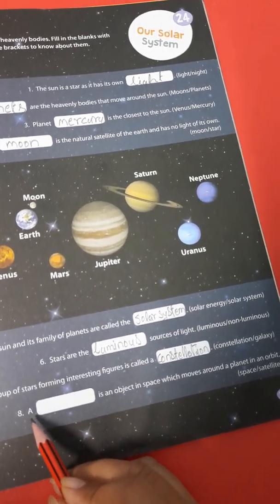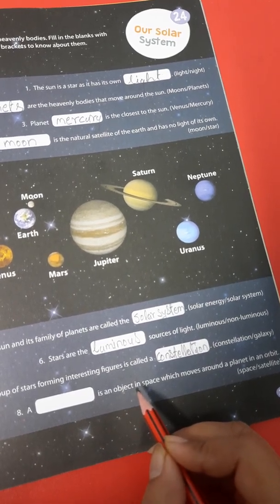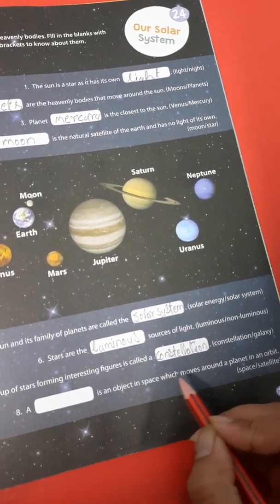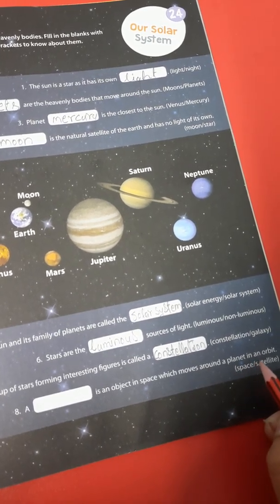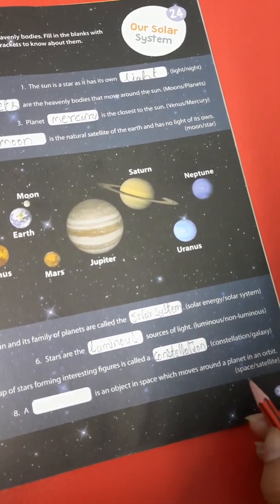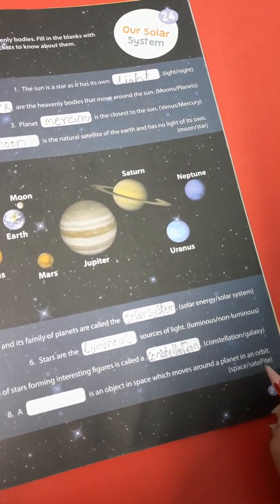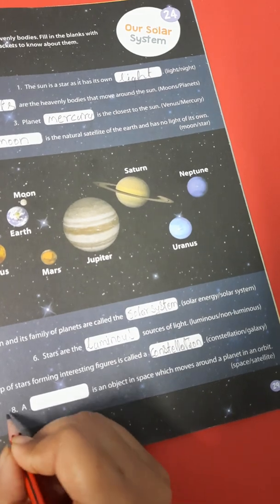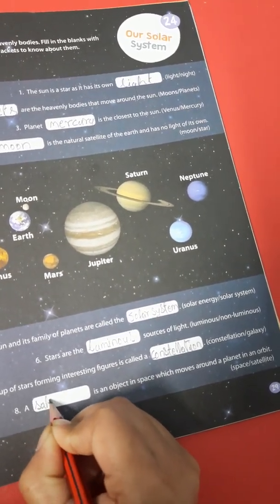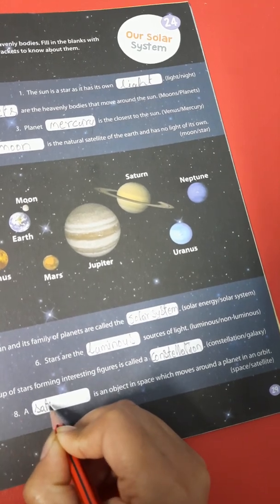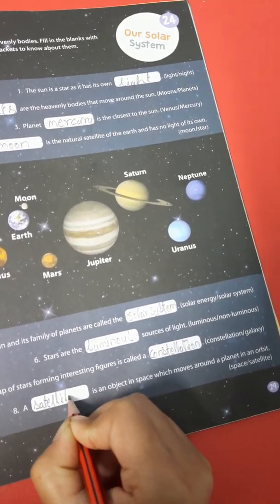Number 8. A dash is an object in space which moves around a planet in an orbit. Space or satellite? It's satellite. You write here: S-A-T-E-L-L-I-T-E. Satellite.